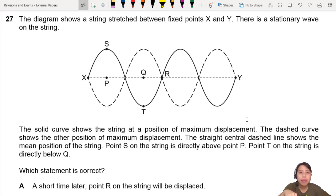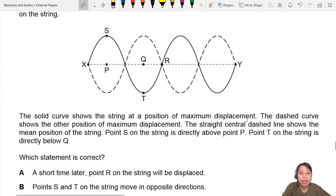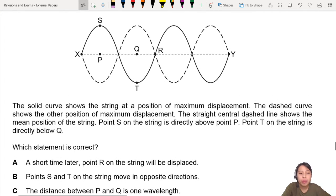Okay, which statement is correct? Let's go through the details. A short time later, A: Point R on the string will be displaced. Where is point R? R will be displaced? No.